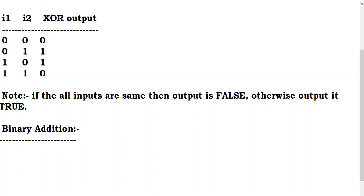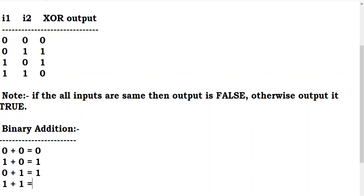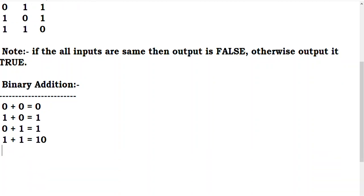For binary addition: 0 plus 0 is 0. Then 1 plus 0 equals 1. Then 0 plus 1 equals 1. Then 1 plus 1: the result bit is 0 and carry forward bit is 1. And 1 plus 1 plus 1: result bit is 1 and carry forward bit is also 1.